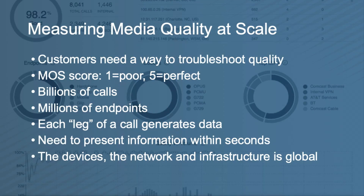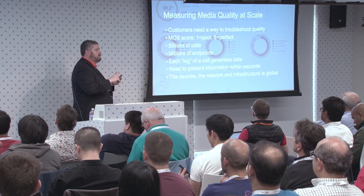Customers need a way to troubleshoot quality. Mean Opinion Score is the largely agreed-upon way to do this. Unfortunately, not everybody implements it identically, so we start to get some variation. Then we talk about the scale — we're talking about RingCentral scale here: billions of calls, millions of endpoints.